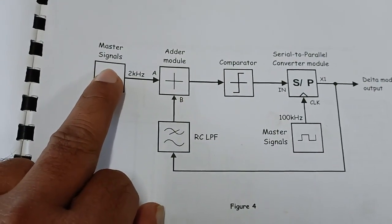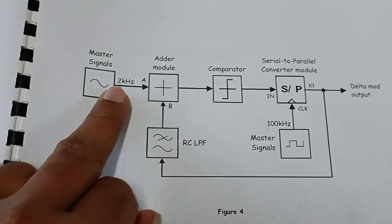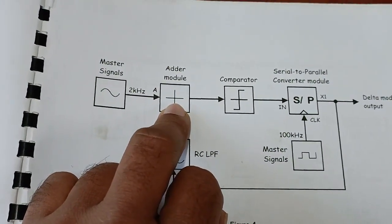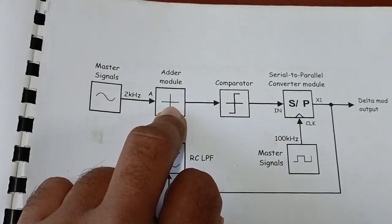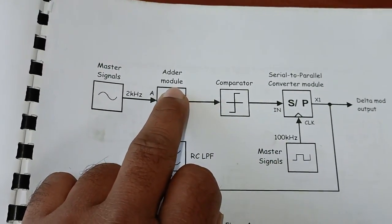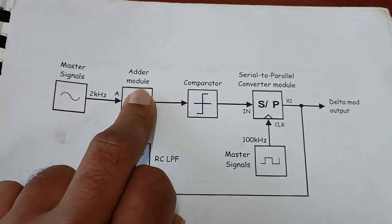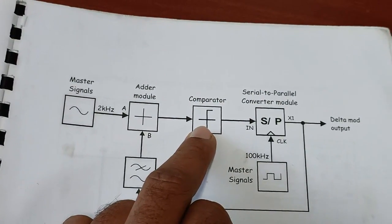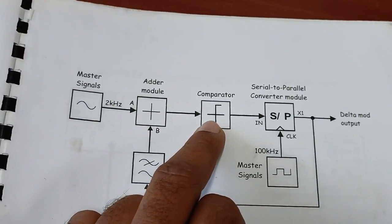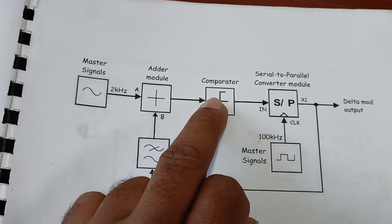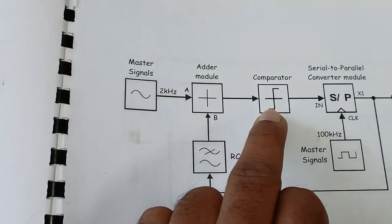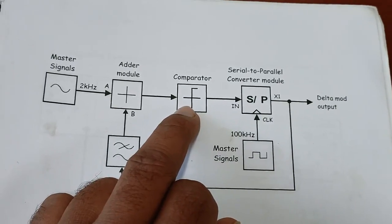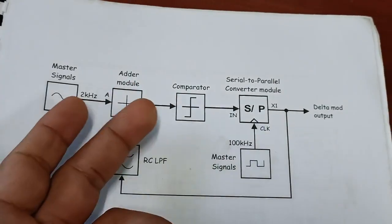The analog sinusoidal signal at 2 kHz is fed into an adder — actually here it subtracts the signal, so we use an adder and subtractor. There is a comparator: if the subtracted value is positive, the comparator output is 1; if the difference is negative, the output is minus 1 or 0.